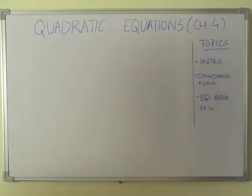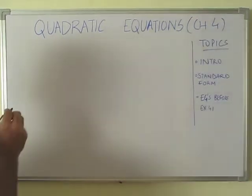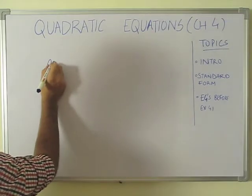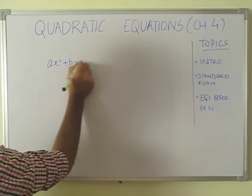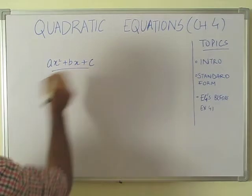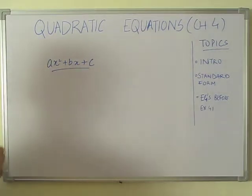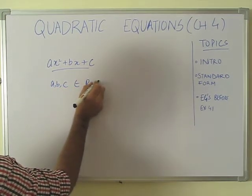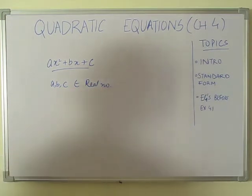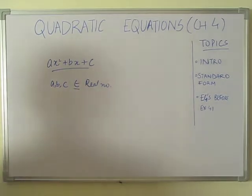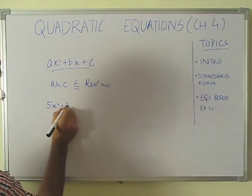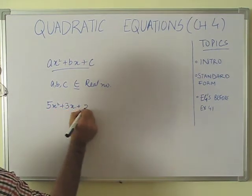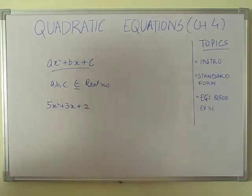In our chapter 2, there are quadratic polynomials. So what are quadratic polynomials? It was ax² plus bx plus c. This is a quadratic polynomial, where a, b, and c belong to real numbers. For example, 5x² plus 3x plus 2 is a quadratic polynomial, where a is 5, b is 3, and c is 2.